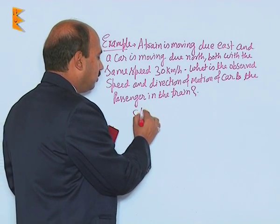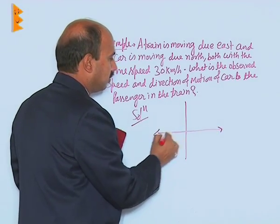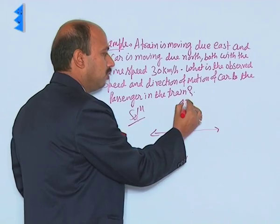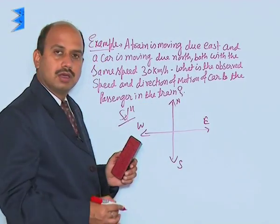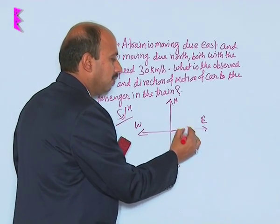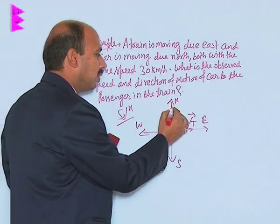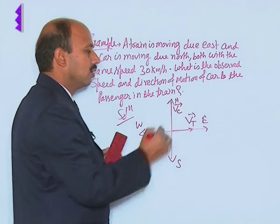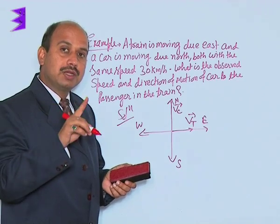Now see here, you have taken these directions: north, south, east, and west. This is the velocity of the train, velocity of the car to this side. Now you have to get the relative velocity of the car with respect to the train.